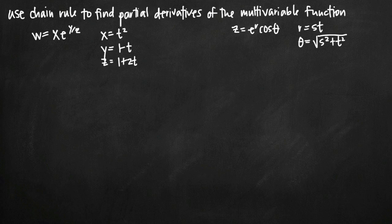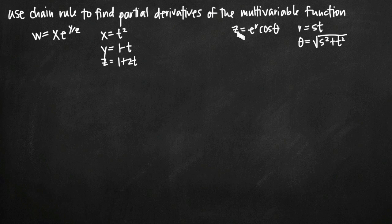Today we're going to be talking about how to use chain rule to find the partial derivatives of multivariable functions, and in this particular video we're going to be doing two problems. The first problem is a case 1 type function where we have one dependent variable in terms of one independent variable. Over here on the right we've got a case 2 type function where we've got multiple independent variables, still one dependent variable.